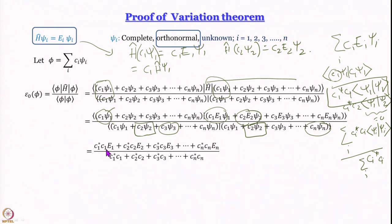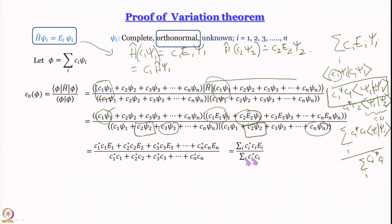So ε₀(φ) = Σᵢ cᵢ*cᵢEᵢ / Σᵢ cᵢ*cᵢ. Now I want to prove the variational theorem — that ε₀ − E₀ ≥ 0. Subtracting E₀ from both sides and combining into one summation, I get: ε₀ − E₀ = Σᵢ cᵢ*cᵢ(Eᵢ − E₀) / Σᵢ cᵢ*cᵢ.